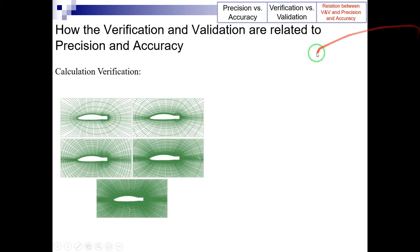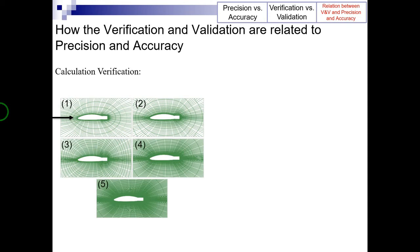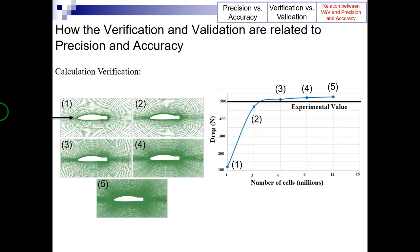Here we can see the geometry, with the mainstream direction shown. For the purpose of calculation verification, the mesh has been refined in five levels, as shown in this picture. The drag forces calculated from the simulations using these five grids, together with the experimental value, are shown in this figure. As the grid is refined, the difference between successive values of drag force decreases, which is an indication of achieving an acceptable level of precision. By comparing the values of drag force obtained from grids number three, four, and five with the experimental value, it is evident that these grids also provide a reasonable level of accuracy.